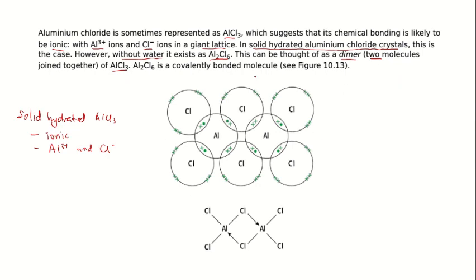Like how it is shown in this figure 10.13, two aluminium chloride joined together by two dative bonds. So chlorine with lone pair electrons are donating the lone pair to aluminium, which is electron deficient. Look at this diagram below.